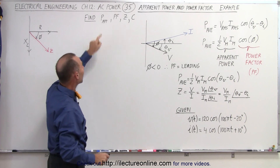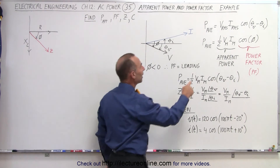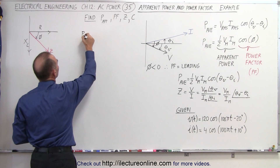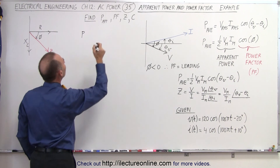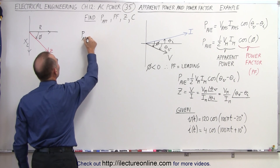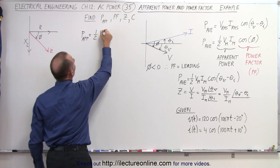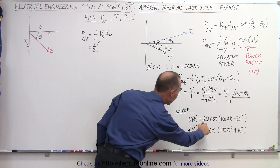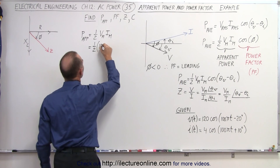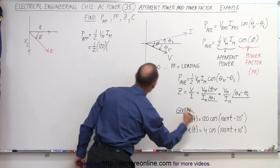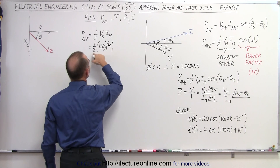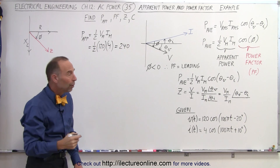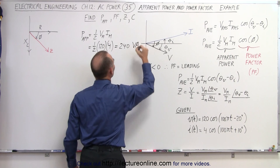The apparent power is equal to one-half of V_max times I_max. So that's one-half times 120 volts times 4 amps, which is 480 divided by 2, equal to 240 volt-amperes (VA).